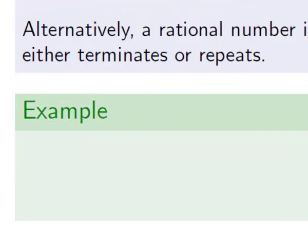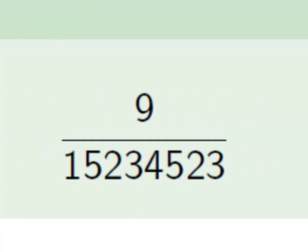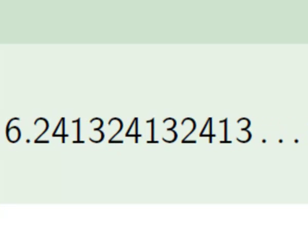Here are some examples of rational numbers. Firstly, 3 over 7 is rational because it's just a fraction of integers. Similarly, 9 over 15,234,523 is also rational. 0.4327 terminates, and so is rational. And then the final one, 6.2413 repeating — 2413, 2413, and the dots indicate that continues forever — is also rational because it has that repeating pattern.